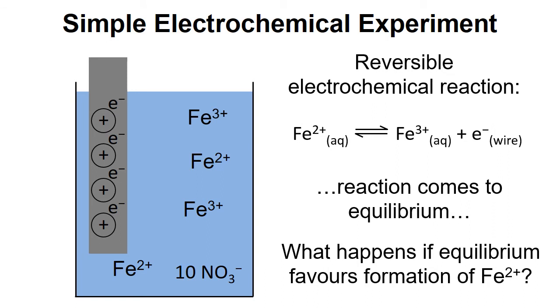To illustrate this, let's take one of the Fe3+ ions, react that with an electron from the wire and turn it into Fe2+. Now we see that the solution has become slightly negative and the wire has become slightly positive. We get this separation of charge between the wire and the solution leading to a potential difference between them.